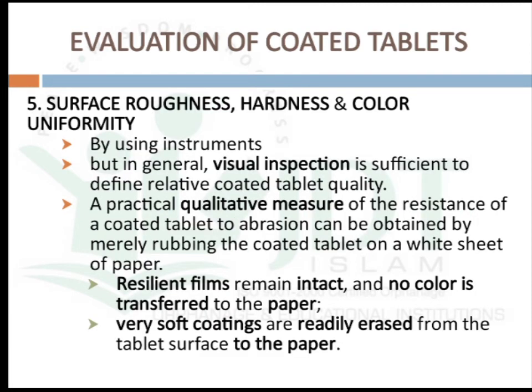The fifth and last test is surface roughness, hardness, and color uniformity. This can be measured using instruments, but in general, visual inspection is sufficient to determine relative coated tablet quality. A practical qualitative measure of resistance of a coated tablet to abrasion can be obtained by merely rubbing the coated tablet on a white sheet of paper.